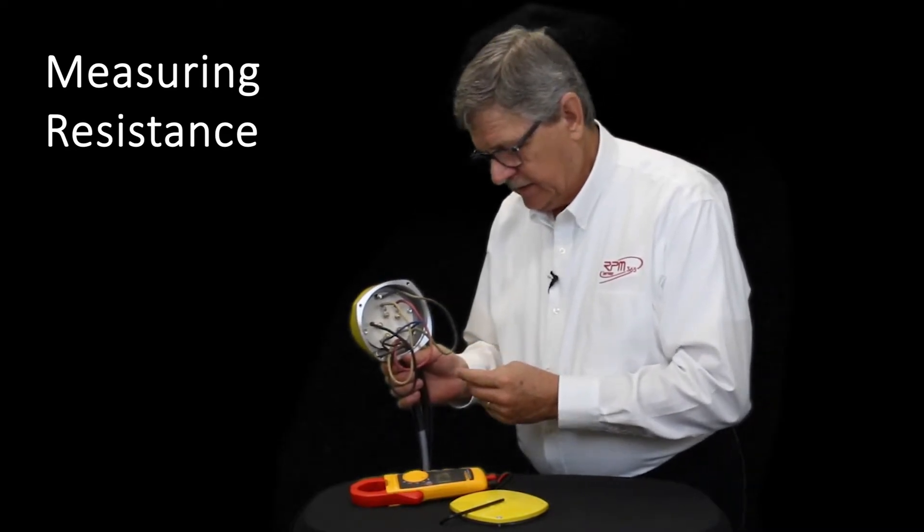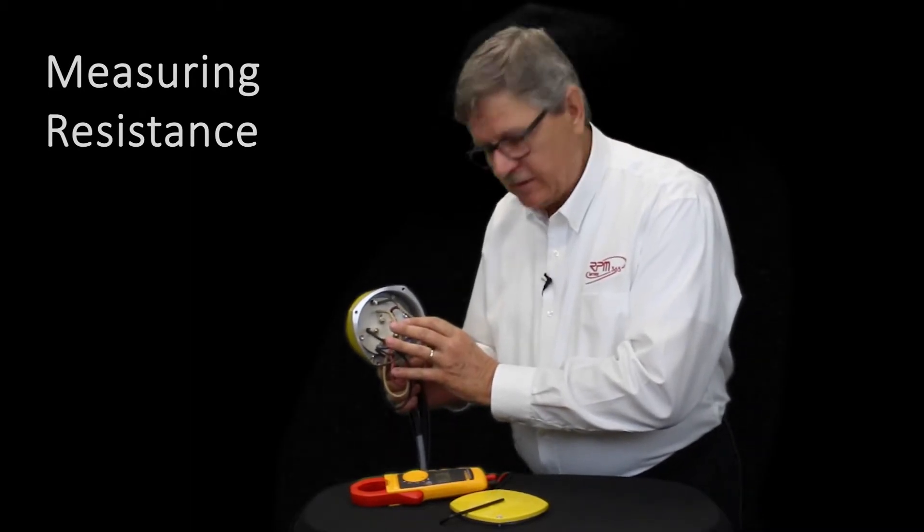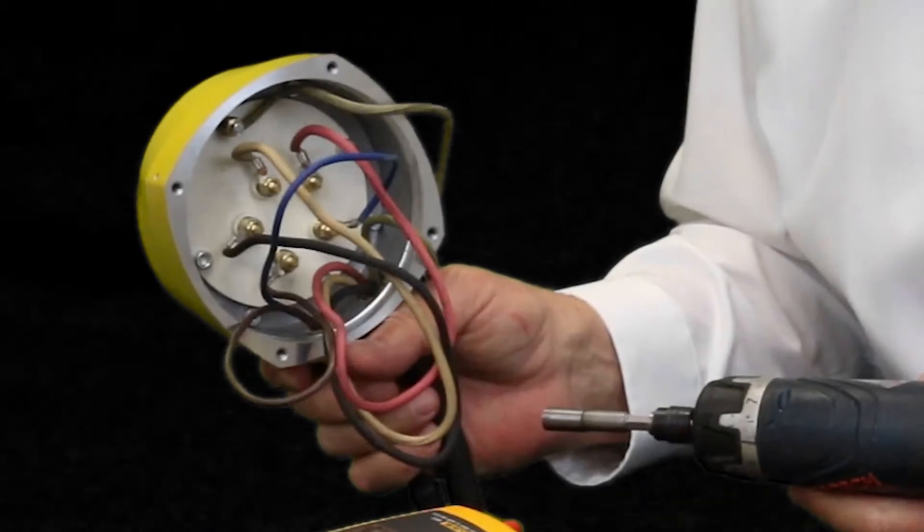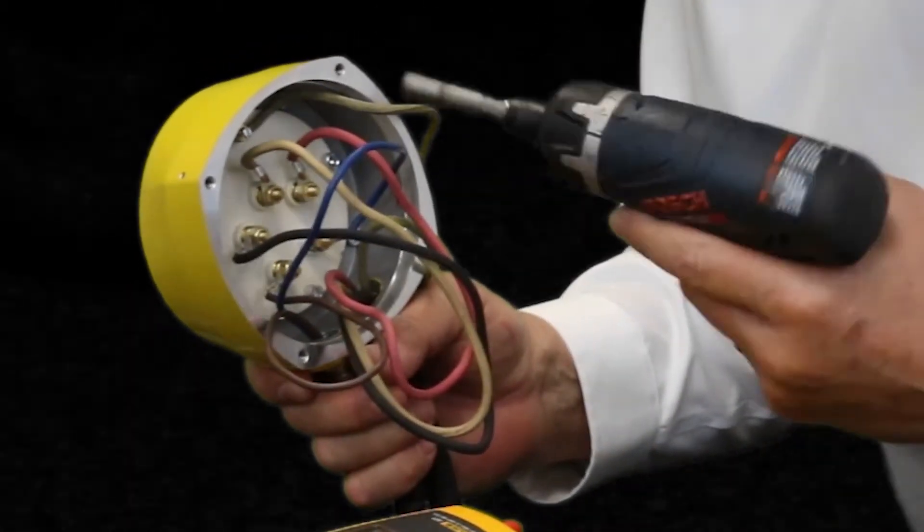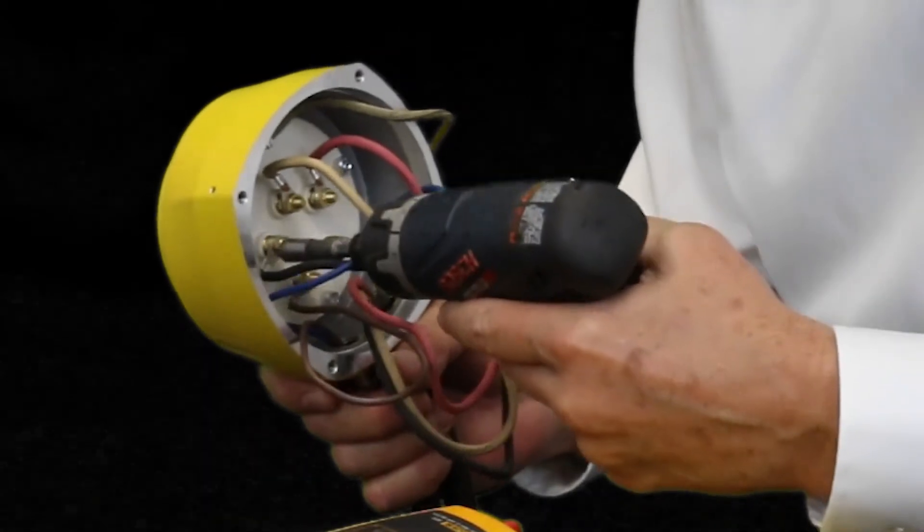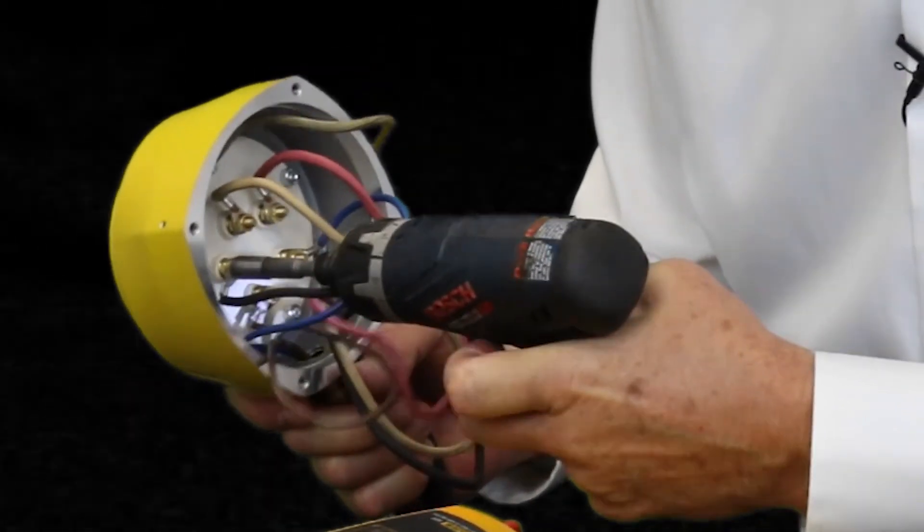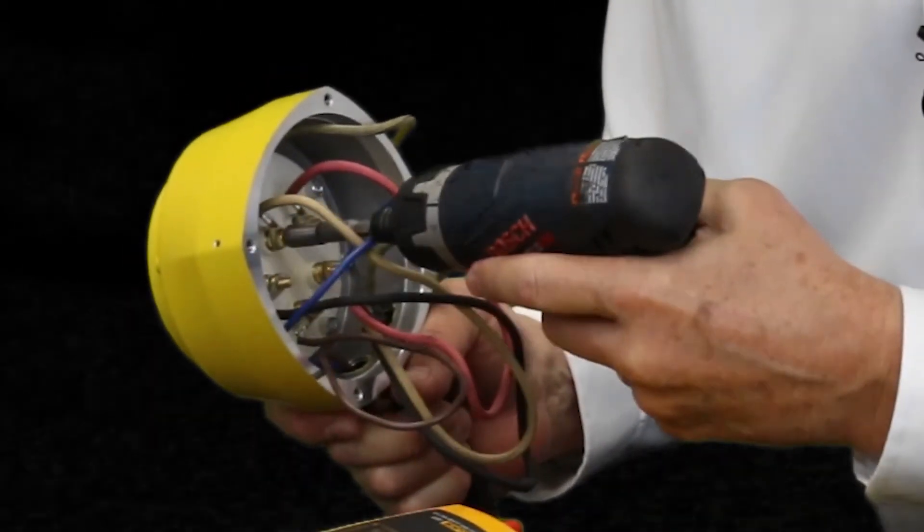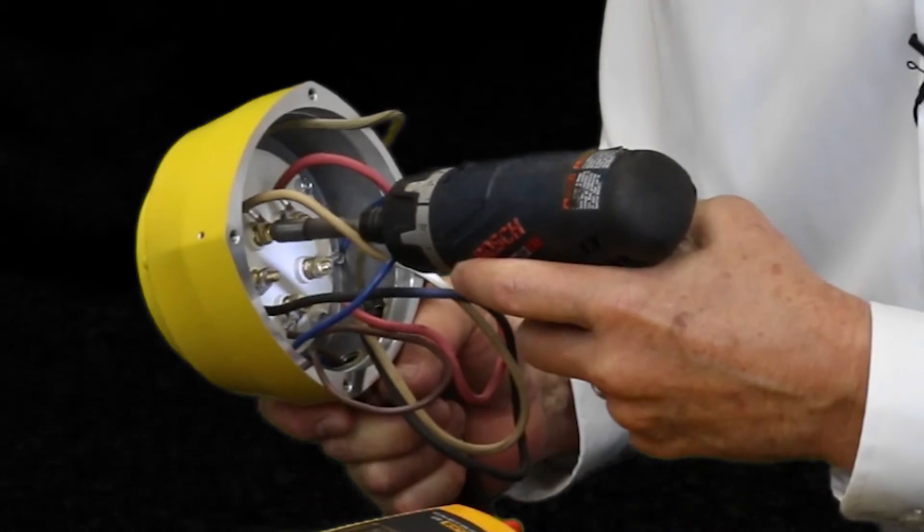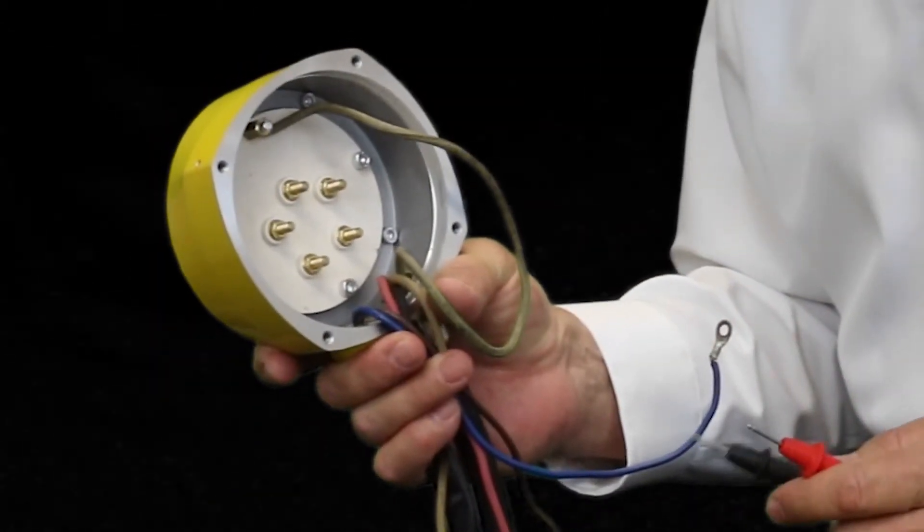First, we need to disconnect the conductors after, of course, shutting off the power supply. We disconnect the conductors using an electric screwdriver. We recommend an electric screwdriver to minimize the torque. Once we have disconnected the conductors, then it is possible to measure the resistance as follows.